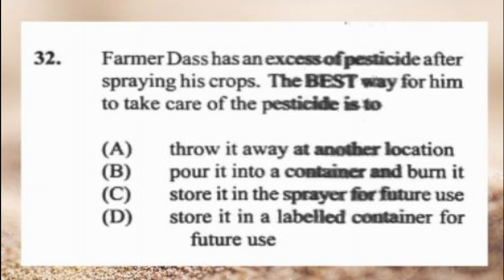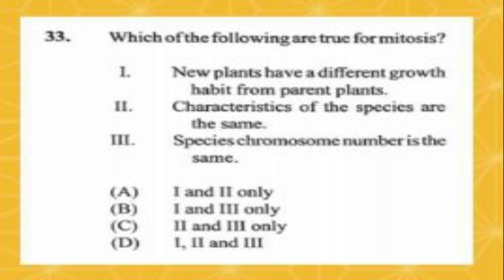Question number thirty-two: a farmer has excess pesticide after spraying his crop. The best way to handle it is A) throw it away at another location, B) pour it into a container and burn it, C) store in the sprayer for future use, D) store in a labeled container for future use. The answer is D, store in a labeled container for future use.